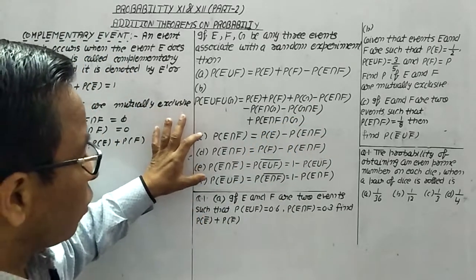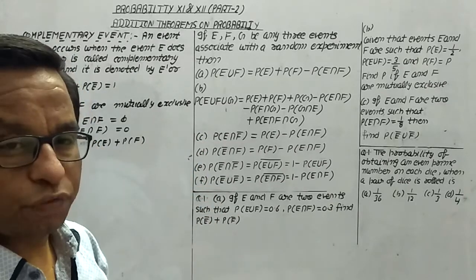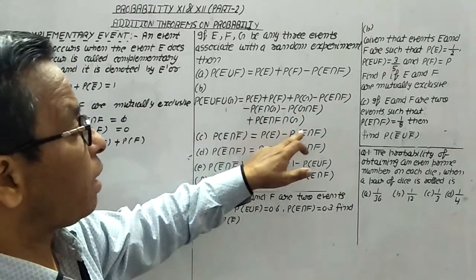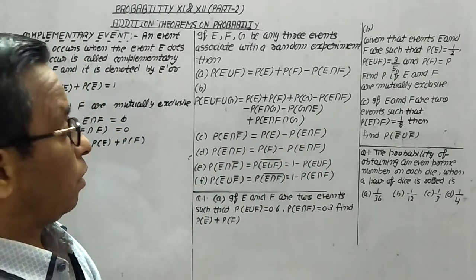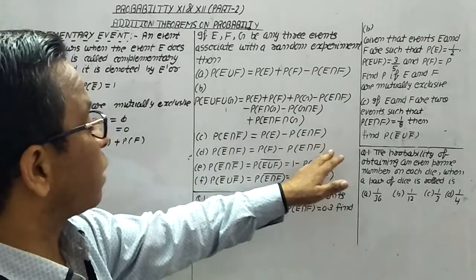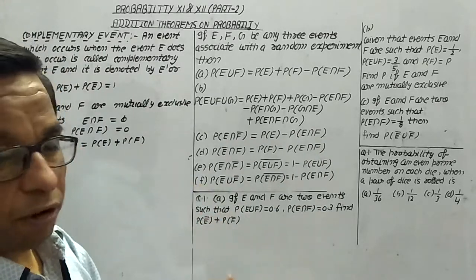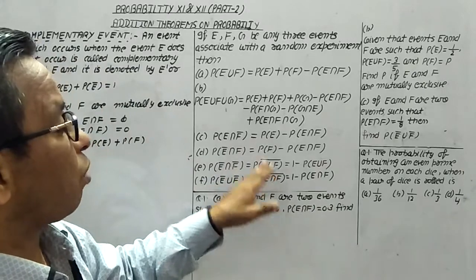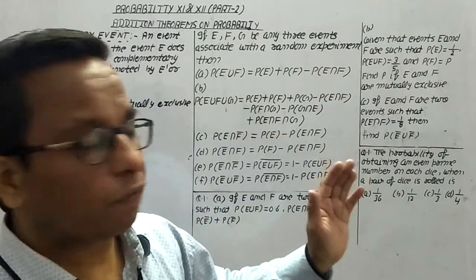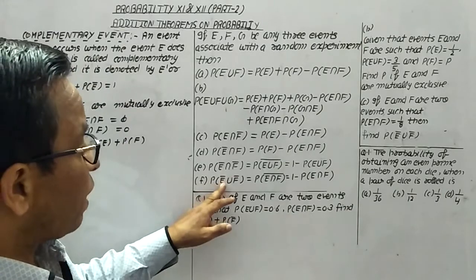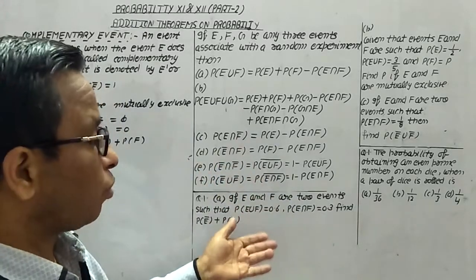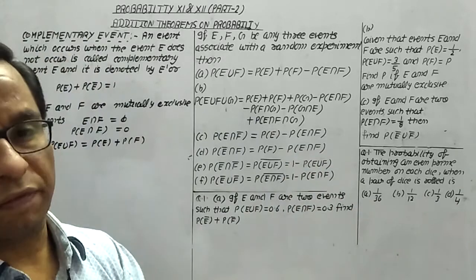There are other theorems we need to remember because we use them in questions. The probability of E intersection F dash equals the probability of E minus the probability of E intersection F. Similarly, the probability of E dash intersection F equals the probability of F minus the probability of E intersection F. On the basis of De Morgan's law, the probability of E dash intersection F dash equals the probability of E union F, whole dash, which equals 1 minus the probability of E union F. And the probability of E dash union F dash equals 1 minus the probability of E intersection F.